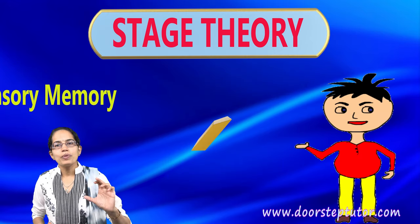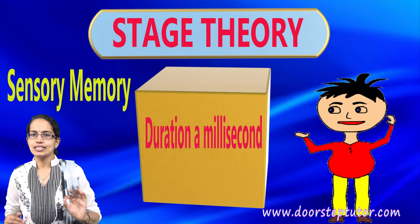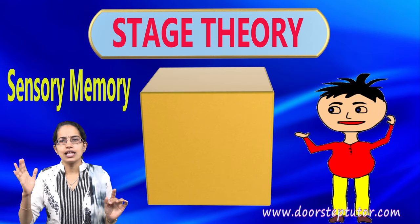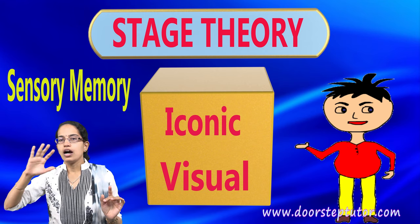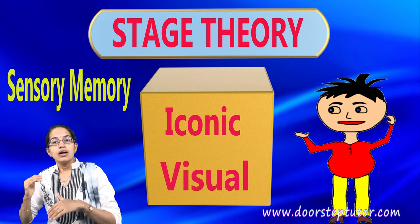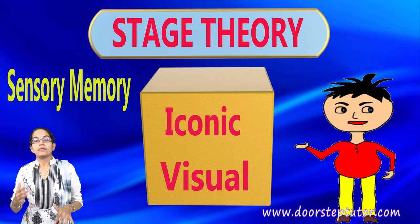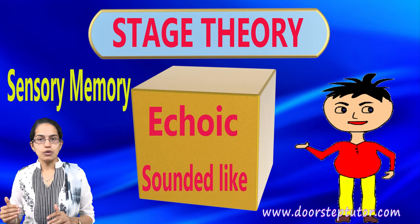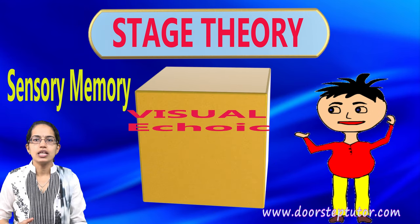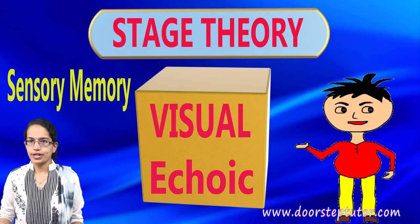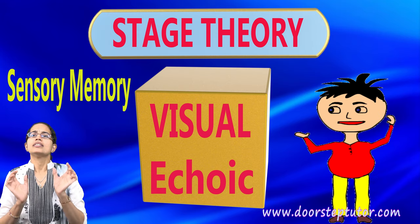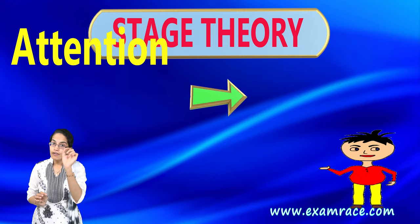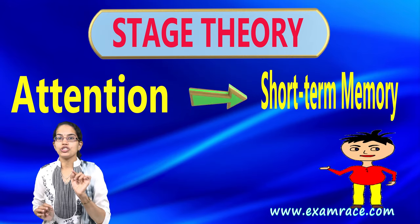The sensory component lasts for less than a second. For example, when a light comes in and then gets turned off, you still have some afterimages of the light that are visible. Similarly, if a friend is playing a guitar and stops, you still hear the reverberations of the sound. So sensory memory can be visual or echoic — auditory in nature — but it lasts for a very short duration.